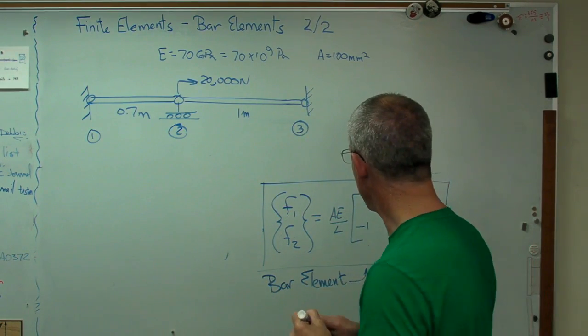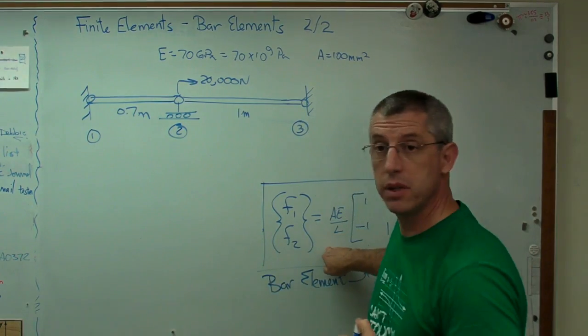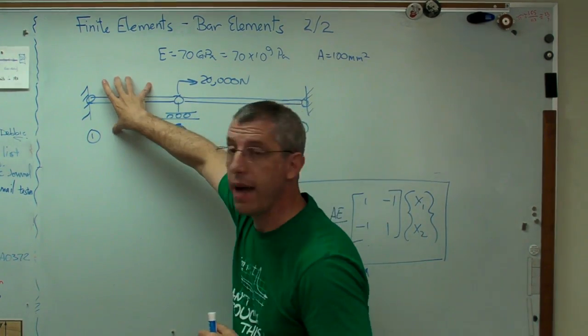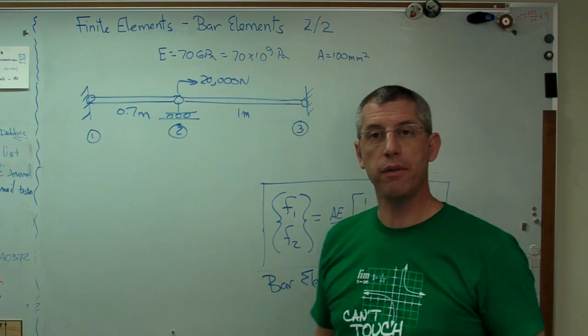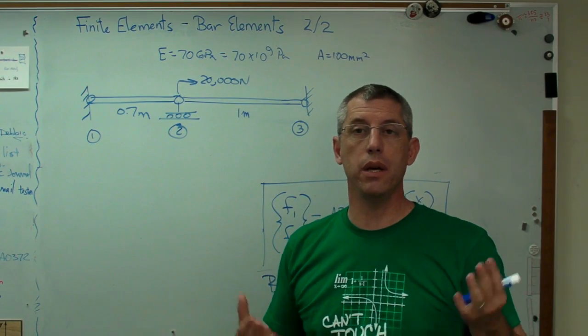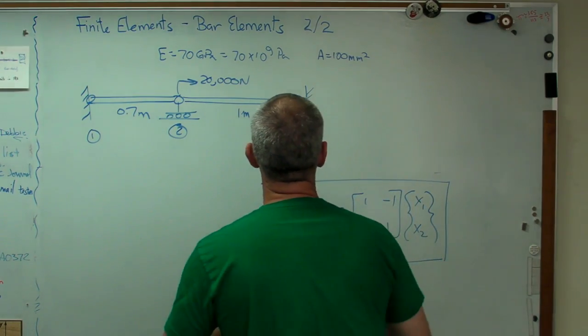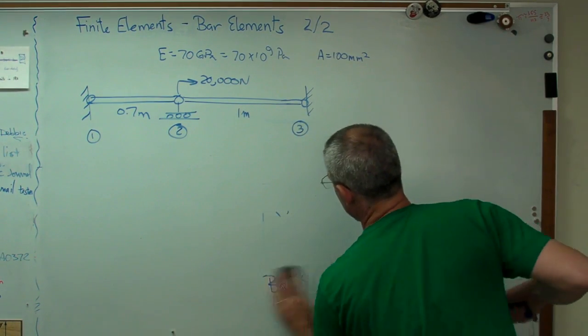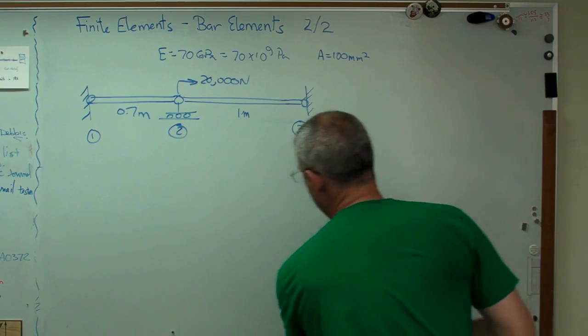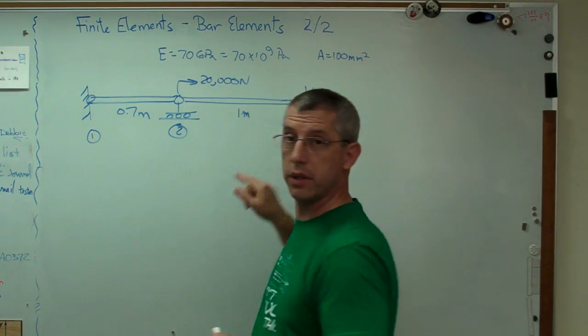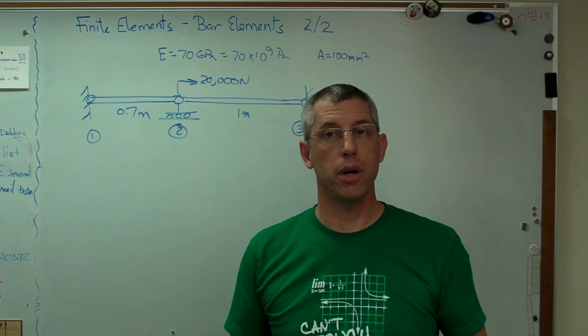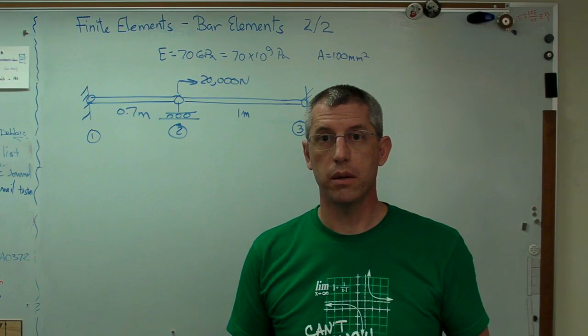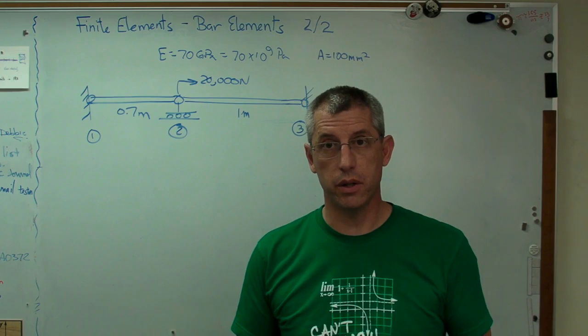Here's what I got to do. I have an element stiffness matrix for that. I have another element stiffness matrix for that element. I have to combine them into something called the global stiffness matrix. So what I'm going to do is erase this to make some room. I've got three grid points. I have one degree of freedom at every grid point.